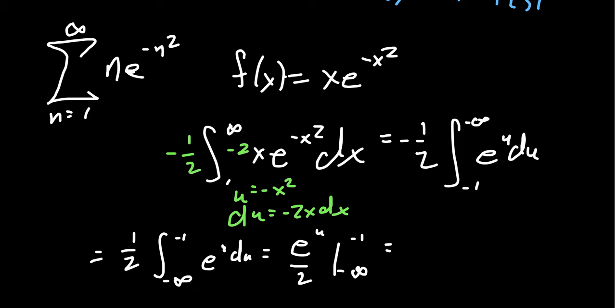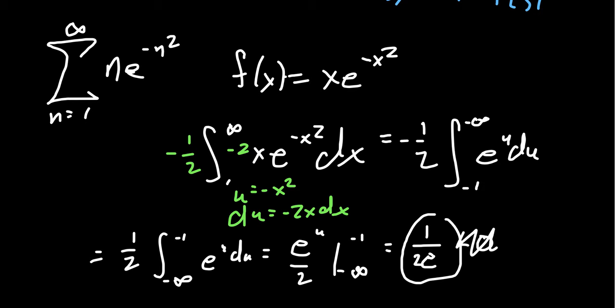So we get e to the u over 2 as we go from negative infinity to negative 1. If we plug in negative 1, we're going to end up with 1 over 2 e. And then with the other one, we're going to end up with 0 as x goes, or as u goes to negative infinity. e to the u would go to 0 in that case. So dropping the 0, we get a finite value here.